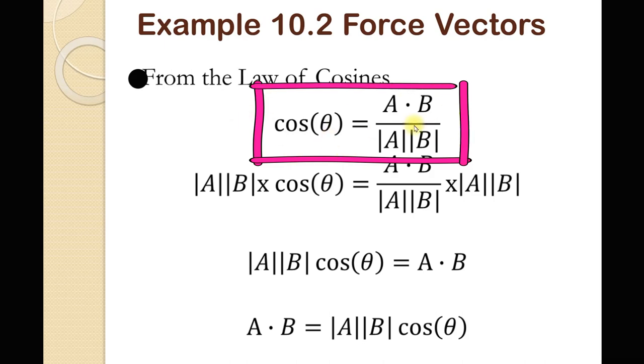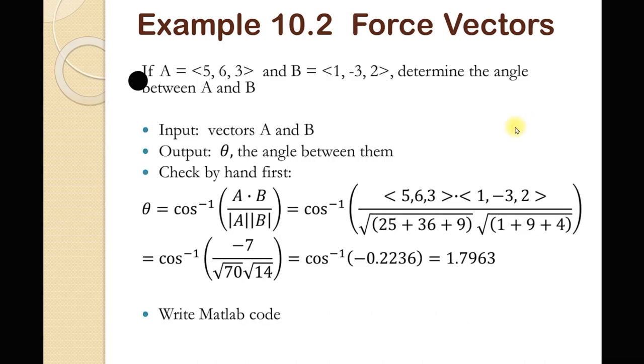So, if you look at this top item right here, this top equation, if we just take the inverse cosine of both sides, we have what theta, the angle between the vectors, equals. And that's what we're going to do. We're going to use that to calculate the angle between vectors. So, suppose we've got a vector a, 5, 6, 3, and a vector b, 1, negative 3, 2, and we want to know the angle between them. Well, this is how we would do it. The angle equals the inverse cosine of the dot product of a and b, divided by magnitude of a times magnitude of b, and then they literally just plug in all the numbers and show you what it would be. And there it is right there, 1.8.